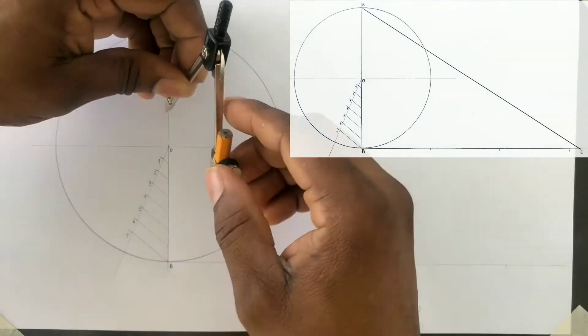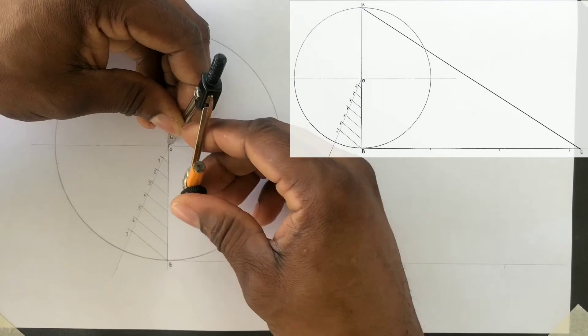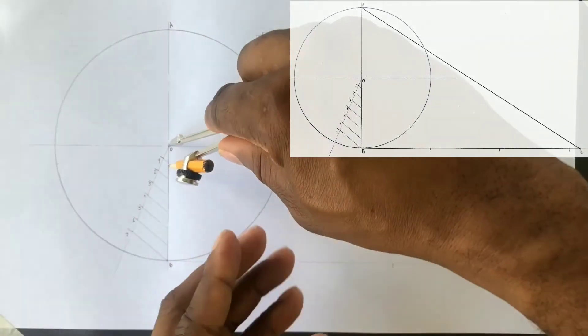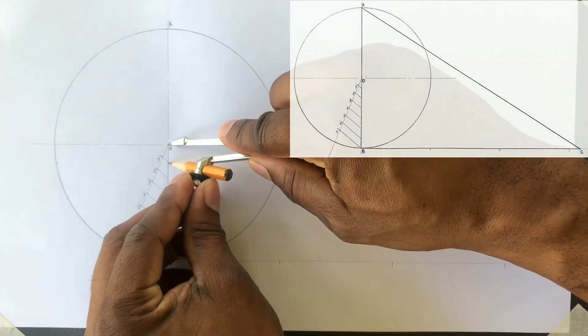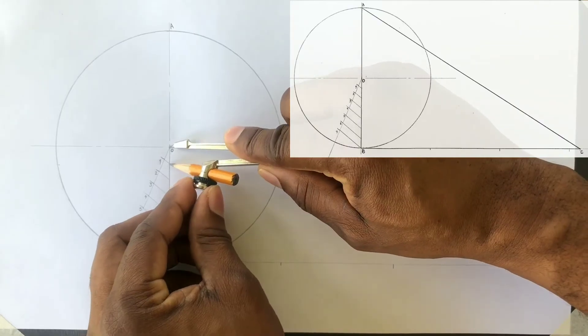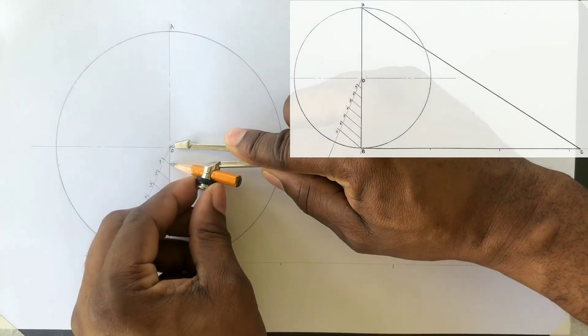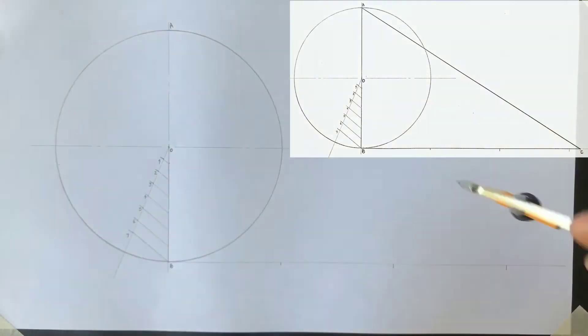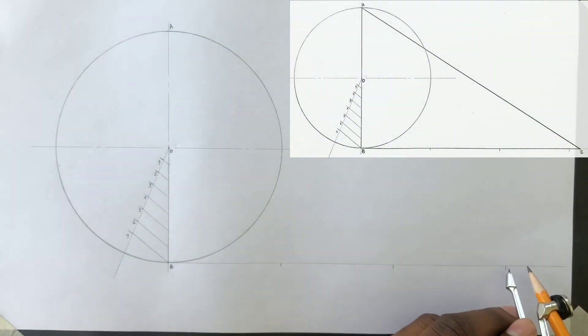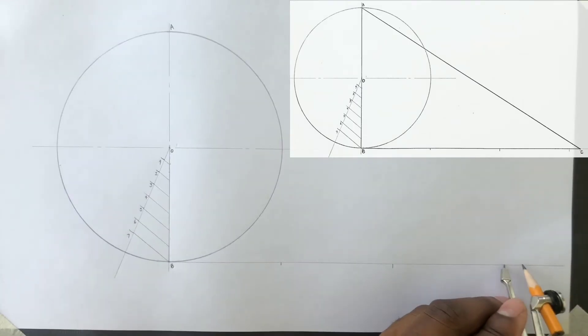Now open your compass to one seventh of the radius, which is from O to where the first division intersected OB line. And from the last or third intersection of the tangent, scribe an arc to touch the tangent at the right.